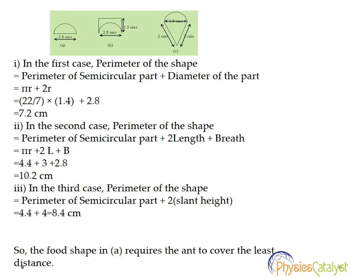So from the three numerical values you can see that for the first shape the ant would have to cover the least distance, and in the second shape the ant has to travel the longest distance.